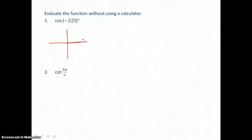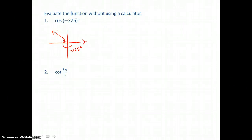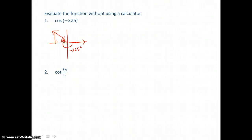We want to evaluate the cosine of negative 225 degrees without using a calculator. Starting on the positive x-axis, we rotate in the negative direction 180 degrees and 45 degrees more, for a total of 225 degrees in the negative direction. From the terminal side, we drop a perpendicular to the x-axis to find theta prime — the acute angle between the terminal side and the x-axis. Since we went 45 degrees past the x-axis, this is a 45-45-90 degree triangle, and our reference angle theta prime is 45 degrees.